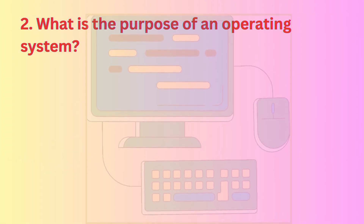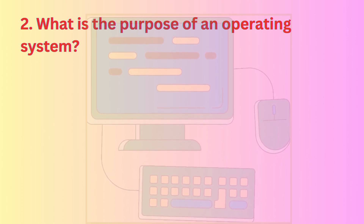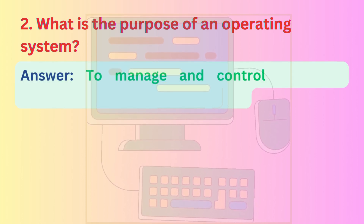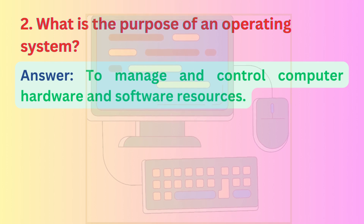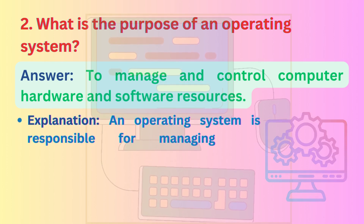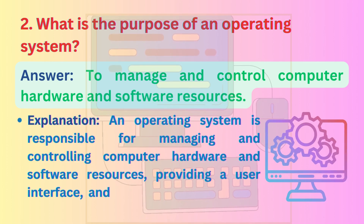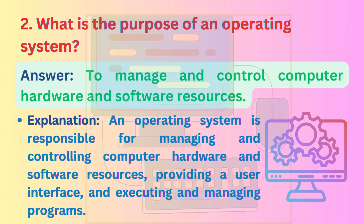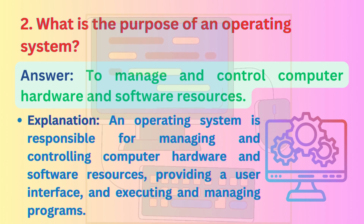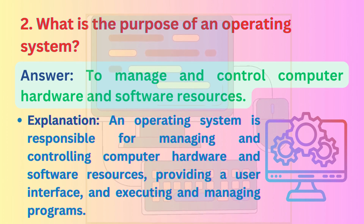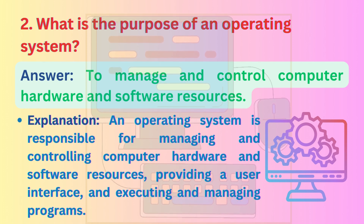Question 2: What is the purpose of an operating system? Answer: To manage and control computer hardware and software resources. Explanation: An operating system is responsible for managing and controlling computer hardware and software resources, providing a user interface, and executing and managing programs.